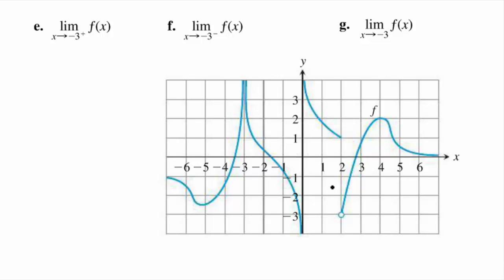Let's look at when x is equal to negative 3. What is the limit of the function as x approaches negative 3 from the right? You see that the y values blow up to positive infinity. What about approaching from the left? The y values, again, approach positive infinity. So we conclude that the limit of the function as x approaches negative 3 is positive infinity.